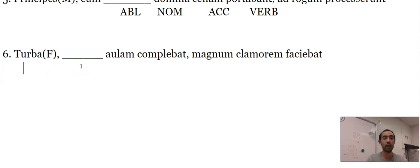Turba is a crowd. And I see aulam which has an 'am.' And that 'am' means that this is accusative. And complebat is our verb. So I'm missing a subject. Turba's got to be that. The crowd was filling the palace.